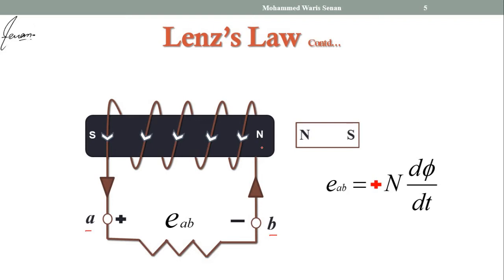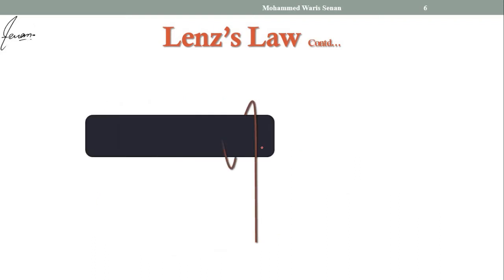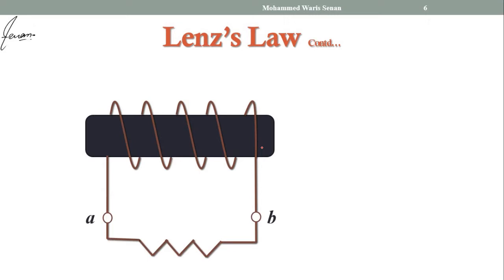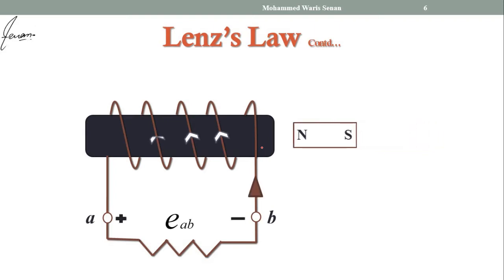If the polarity which you have taken is according to Lenz's law, the sign of induced EMF will be +N dφ/dt. Now let us take another example. In this case, the direction of wire wound over the soft iron core is changed. Let us bring a bar magnet and move it towards the coil — an EMF will be induced. In this case also let us take terminal A as positive and terminal B as negative.